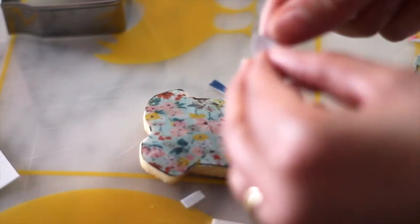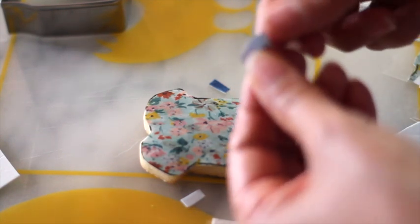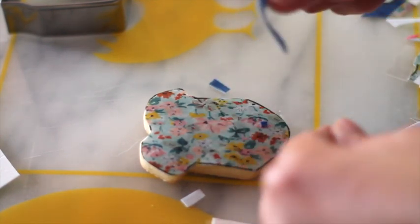For this other onesie I'm going to use the denim edible image and I'm going to cut out a bow and some other little things to add some details to the onesie.